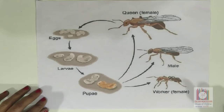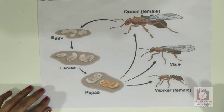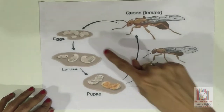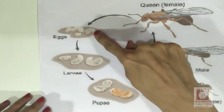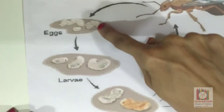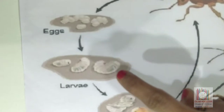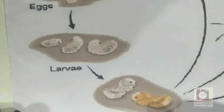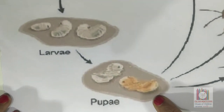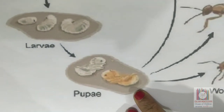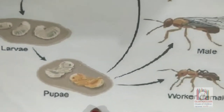Let's revise the life cycle of the ant: egg, larva, pupa, and adult.